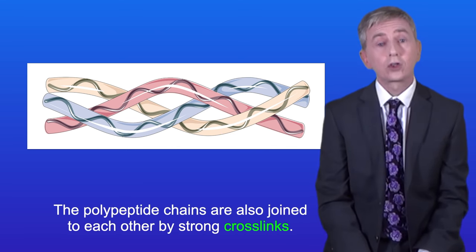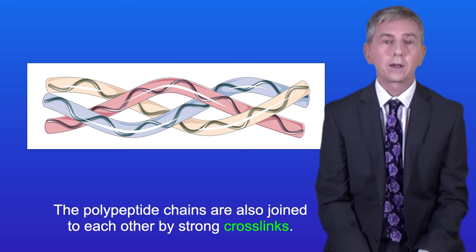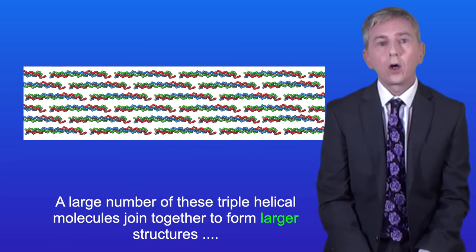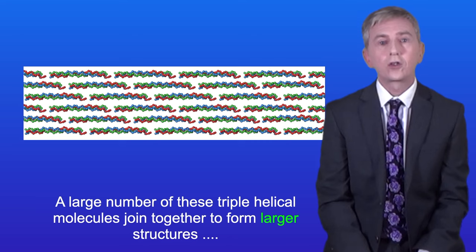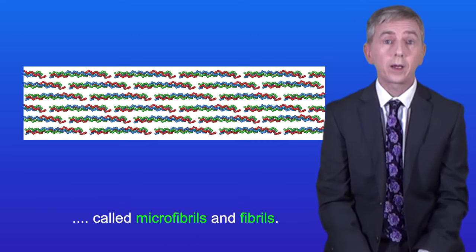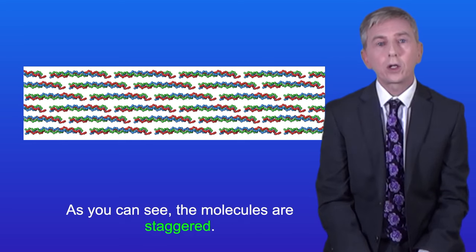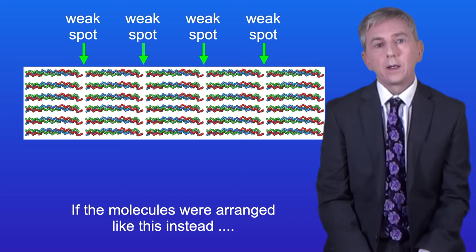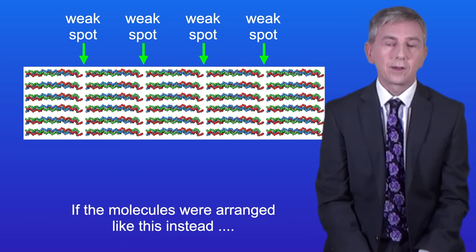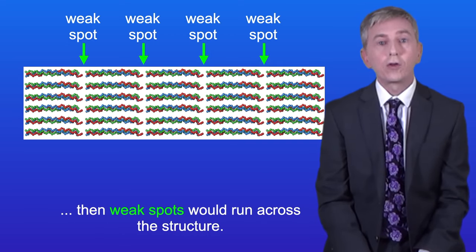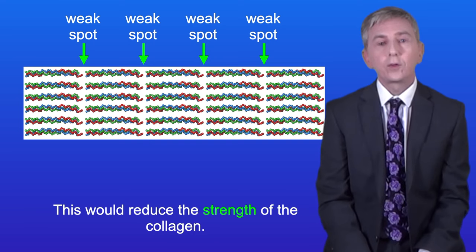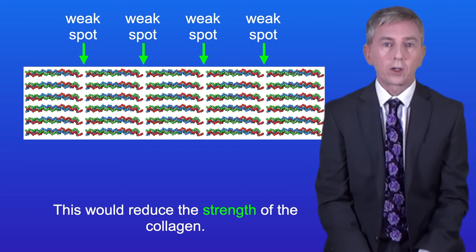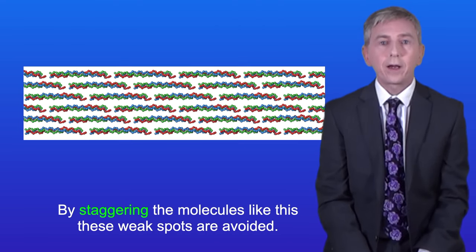The polypeptide chains are also joined to each other by strong crosslinks. A large number of these triple helical molecules join together to form larger structures called microfibrils and fibrils. The molecules are staggered, which means there are no weak spots. If the molecules were not staggered, weak spots would run across the structure and reduce the strength of the collagen. By staggering the molecules, these weak spots are avoided.